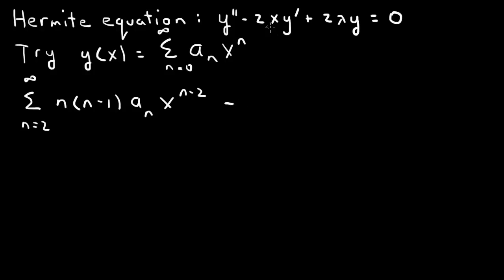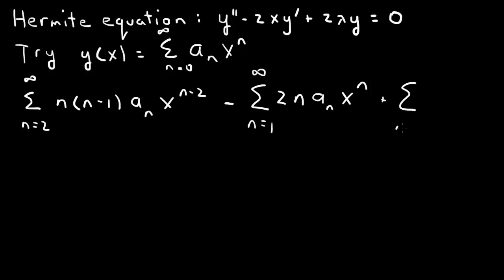Then minus 2x times y': the first term in the power series is zeroed out, so we have from n=1 to infinity of 2n·aₙ·xⁿ, since multiplying x by the derivative of xⁿ gives back xⁿ. Plus 2λy, which is the sum from n=0 to infinity of 2λaₙxⁿ. All of that equals 0.